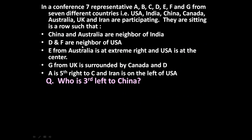The given problem is: in a conference, 7 representatives A, B, C, D, E, F and G from 7 different countries — USA, India, China, Canada, Australia, UK and Iran — are participating. They are sitting in a row such that China and Australia are neighbours of India, D and F are neighbours of USA, E from Australia is at extreme right and USA is at the centre, G from UK is surrounded by Canada and D, A is fifth right to C, and Iran is on the left of USA.